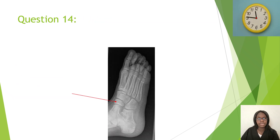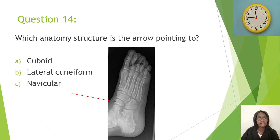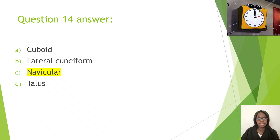Question fourteen: Which anatomy structure is the arrow pointing to? A, cuboid; B, lateral cuneiform; C, navicular; D, talus. The correct answer is C, navicular.